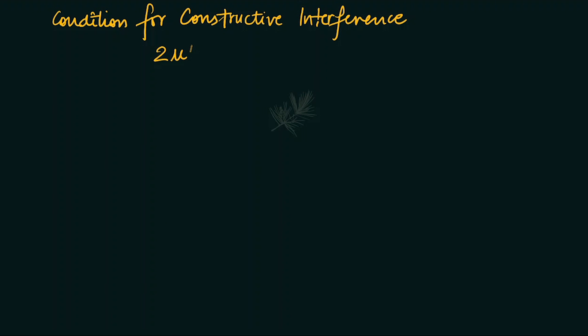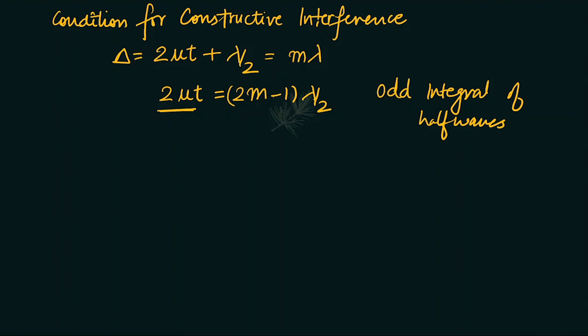This is the basic introduction, the condition for constructive interference. The path difference 2μt, where μ is the refractive index of that film and t is the thickness. So our path difference 2μt plus λ/2 equals mλ. We can rewrite this as 2μt = (2m-1)λ/2. That means 2μt should be the odd integral of half wavelengths, that's the condition for constructive interference, for the formation of bright rings.